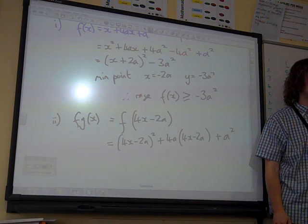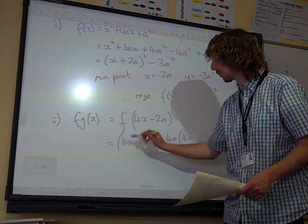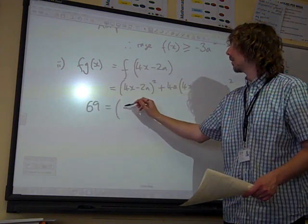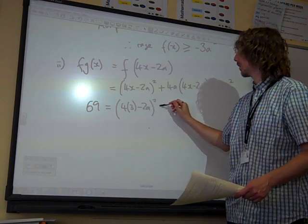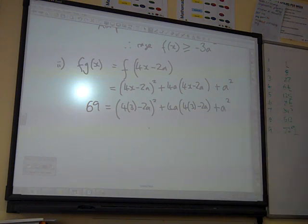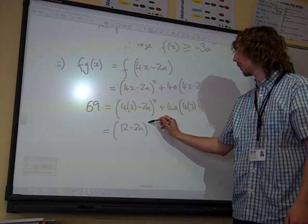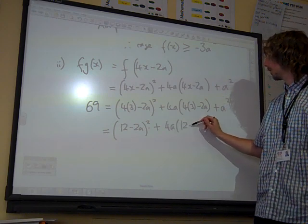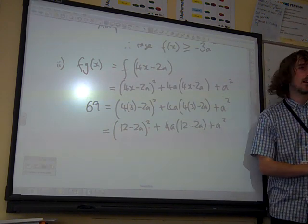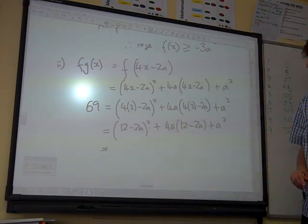I'm not going to do anything too great to factorise it at the moment, because I know that f of g of 3 is equal to 69. So I know that if I put 3 in there instead of x, I've got something that I can work with. I now have an equation in terms of a. Not the nicest of equations, but it could be something to go at.